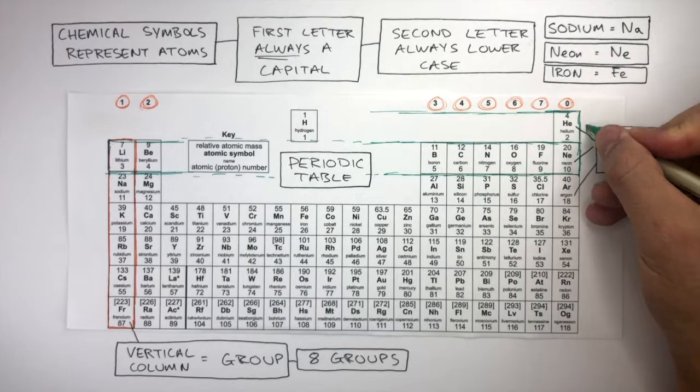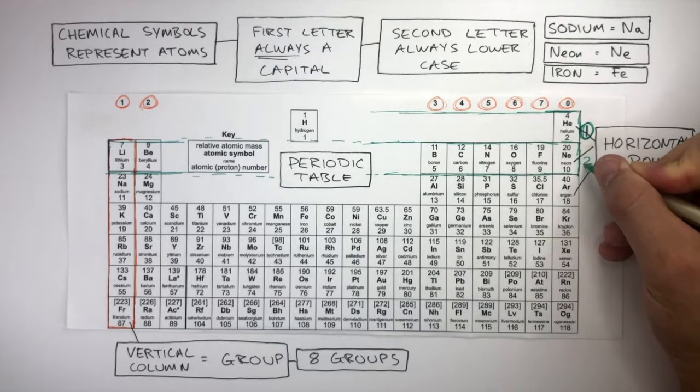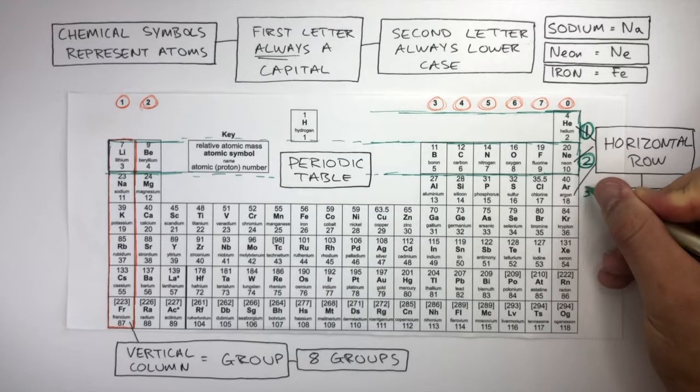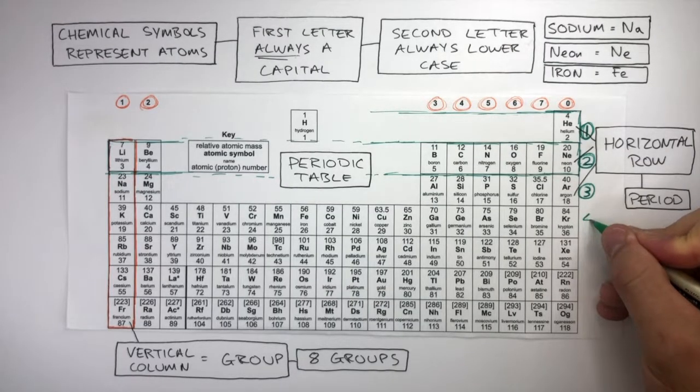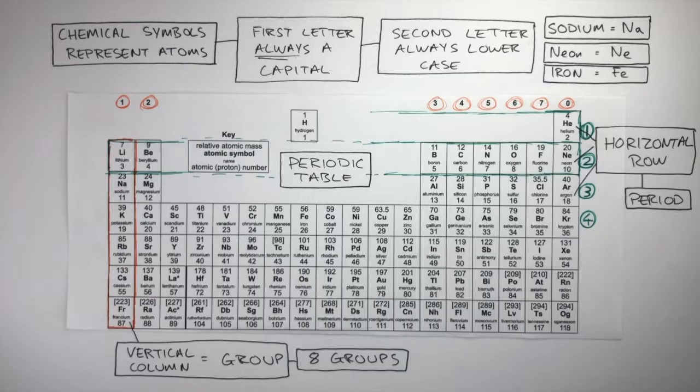Helium is the only element in Period 1. Below this is Period 2. Below this is then Period 3 and below this is Period 4 and it continues. Remember, a Period is the Horizontal Row and the Group is the Vertical Column.